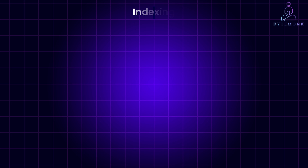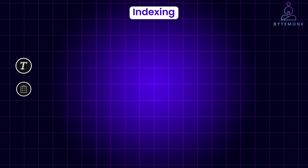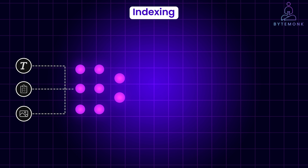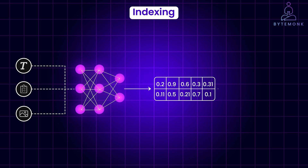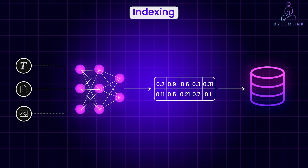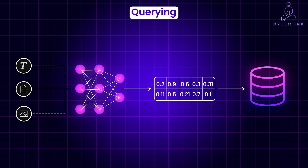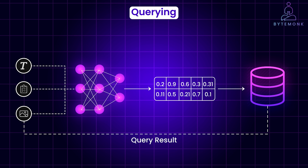Here is the workflow. You take your data — such as text, documents, images, etc. — and convert them into vectors using an embedding model. These vectors are stored in the database. And when you have a new item, for example a user search query, you convert it into a vector. The database then efficiently searches for the vectors closest to your query vector, returning the most similar items.